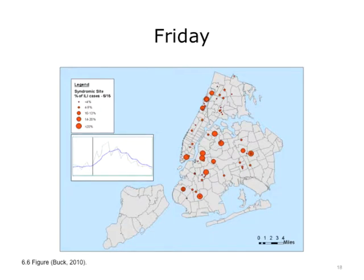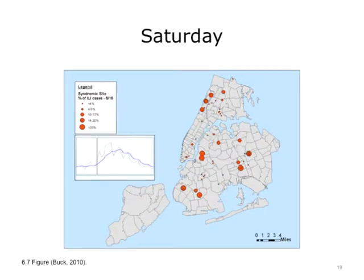The graph on the left-hand side shows the epidemic curve in blue, and the day of the graph is indicated by a black vertical bar. This map shows the distribution of ILI in NYC on Friday, May 15. This map shows the distribution of ILI in NYC on Saturday, May 16.